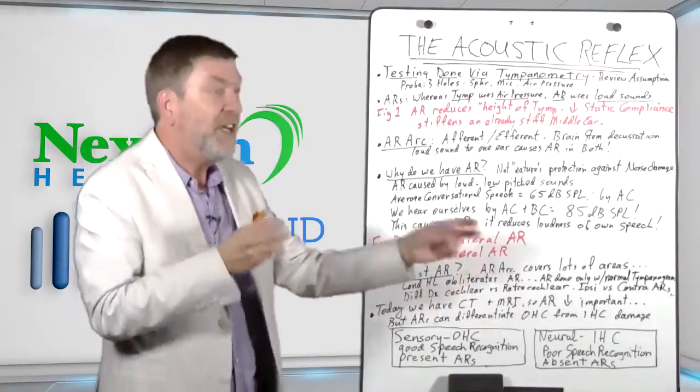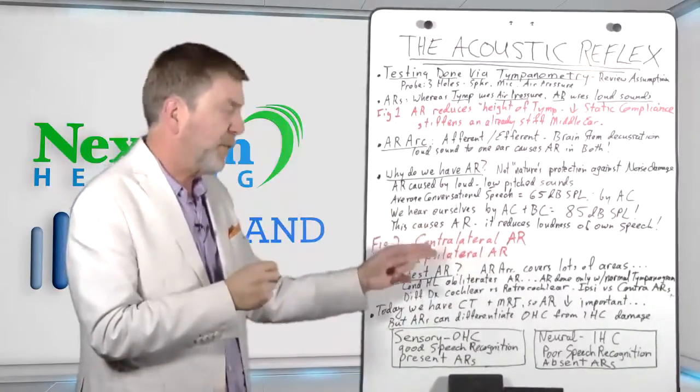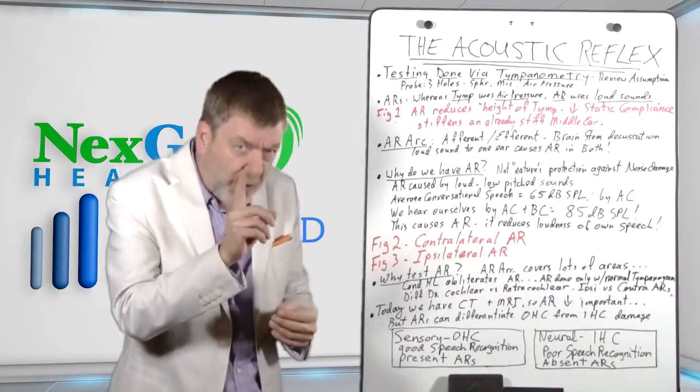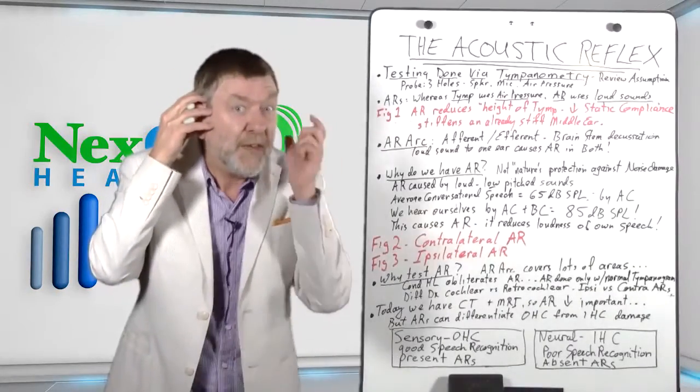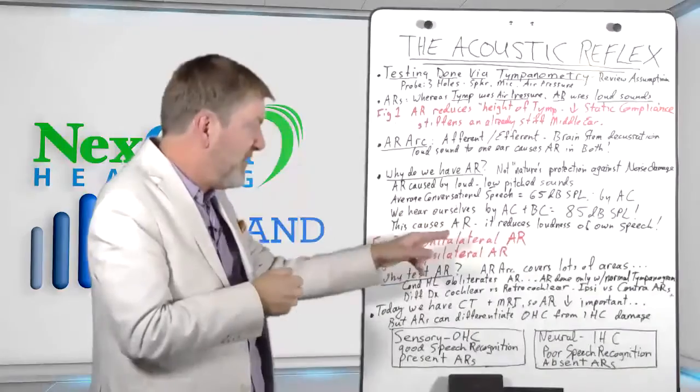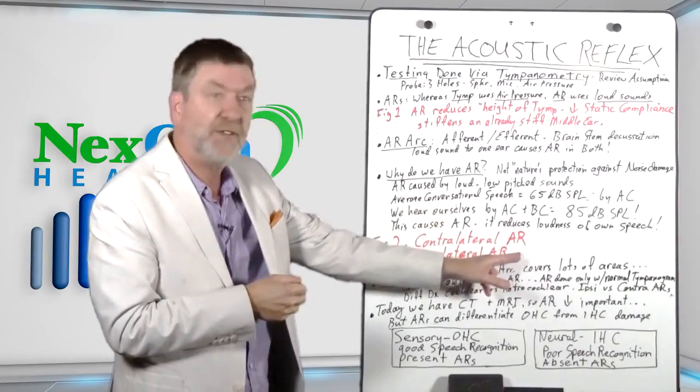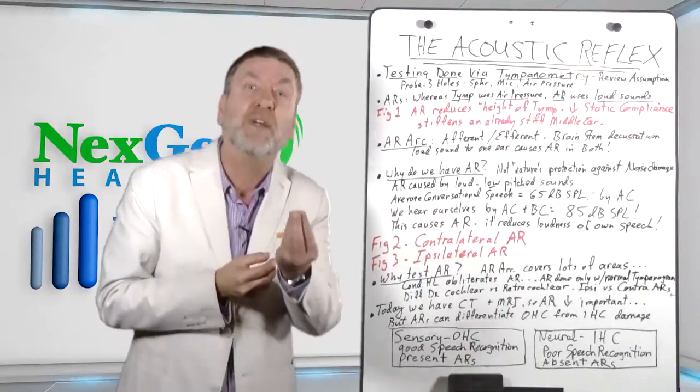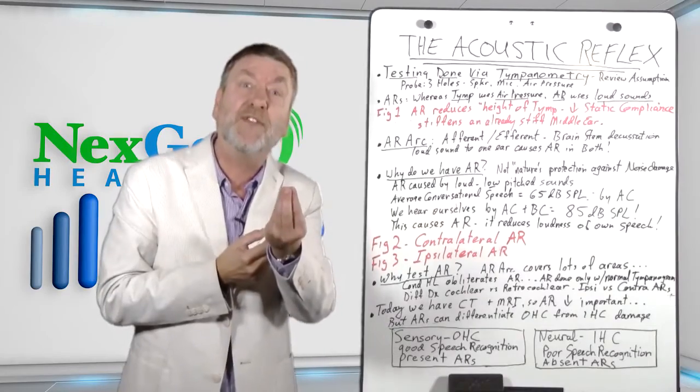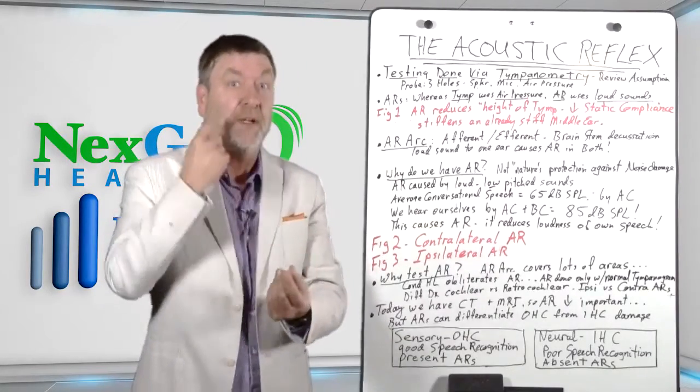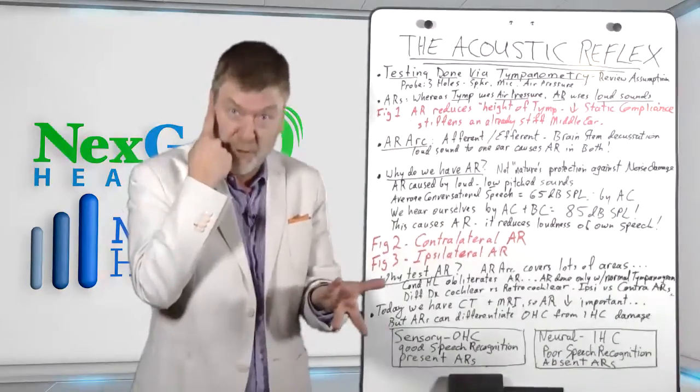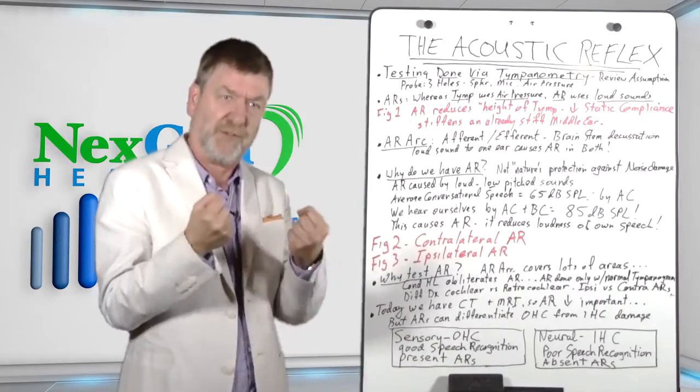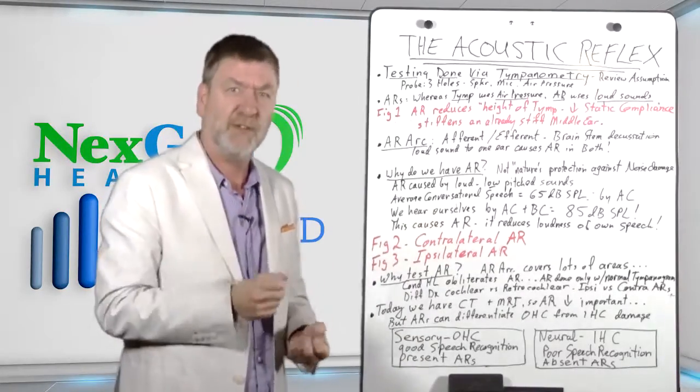We used to use ipsilateral and contralateral reflexes. We would compare the results between those sets, those measurements. Because, remember, contralateral, loud sound is put here and the measurements made in the opposite ear. If you had a different pattern of reflexes for here than for ipsilateral, you might help to... It might help to differentially diagnose between deep intra-axial brain stem lesions as opposed to eighth nerve schwannoma or a neuroma. An eighth nerve tumor. So the comparison of the two used to be used in order to help differentiate between low brain stem and eighth nerve tumors.